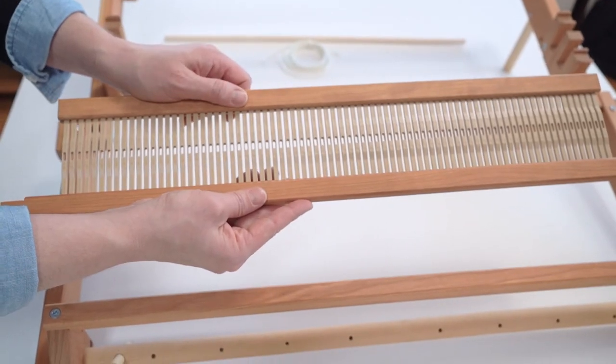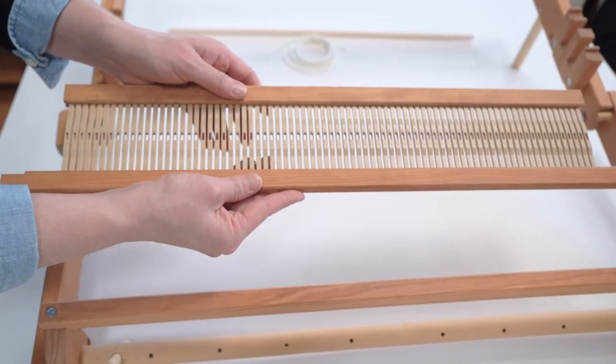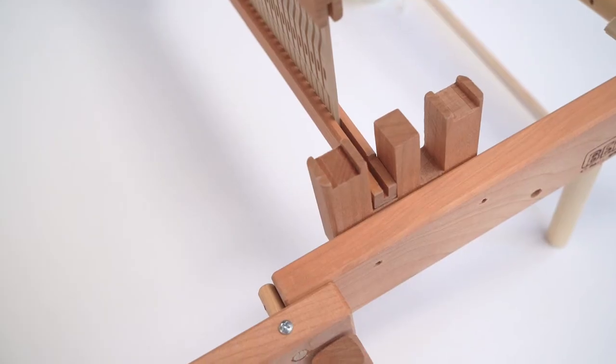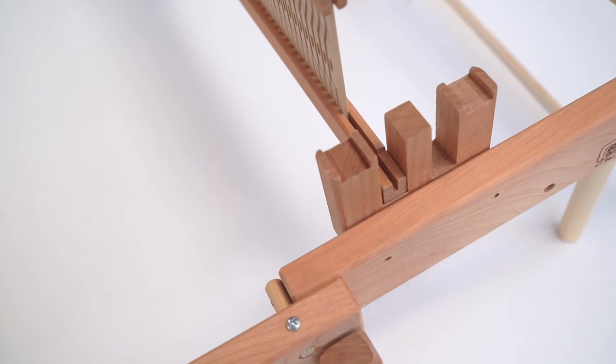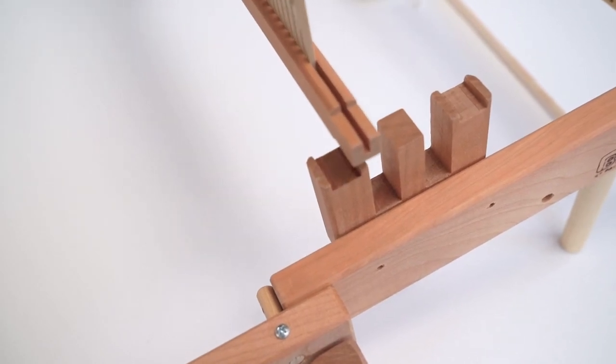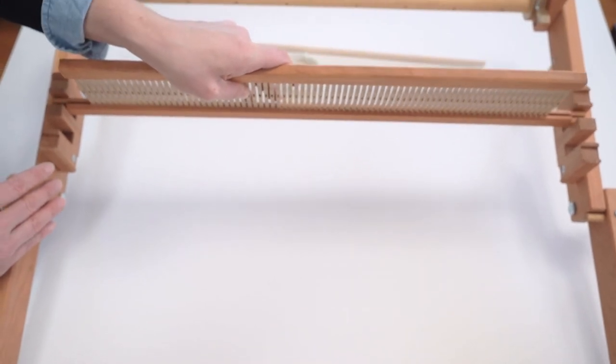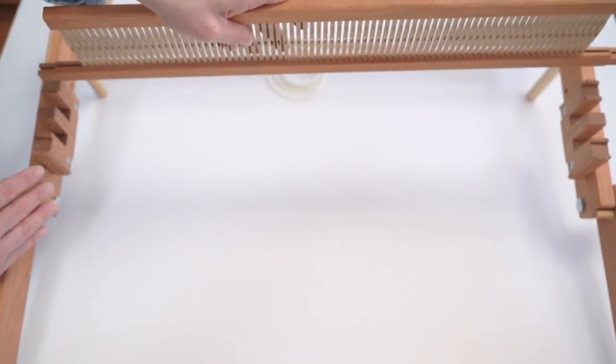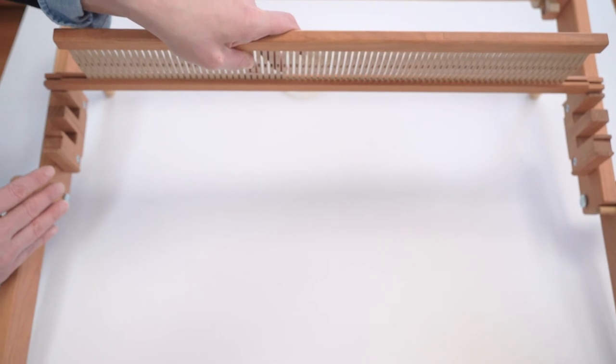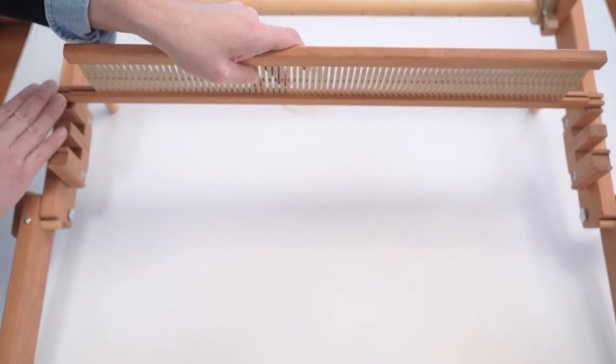The heddle that comes with it is an 8 dent heddle and it's 20 inches wide and this would be your down shed once it's warped and then it fits nicely up here for your up shed. And there are two notches so you can comfortably fit two heddles on the loom and do a two heddle project.